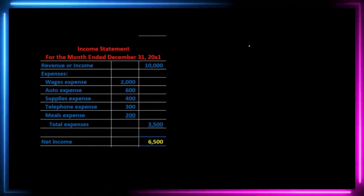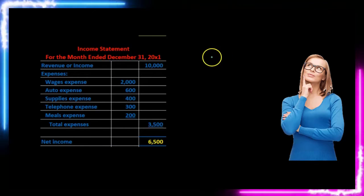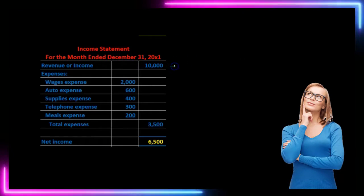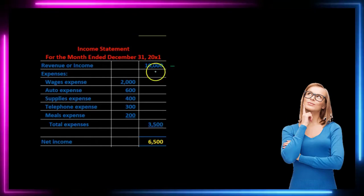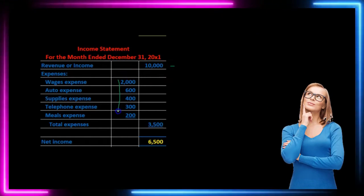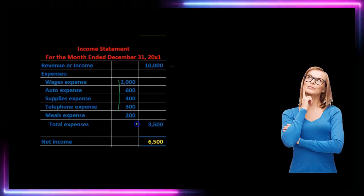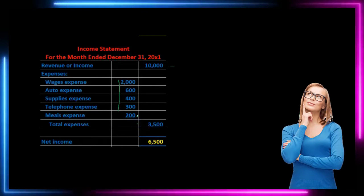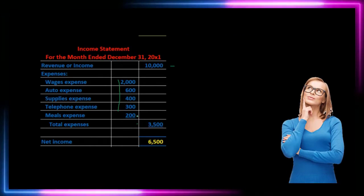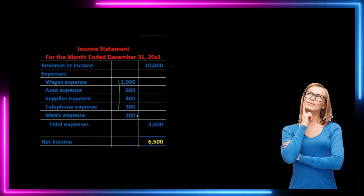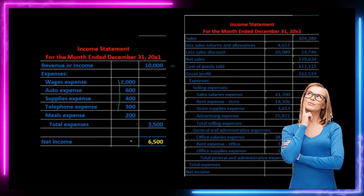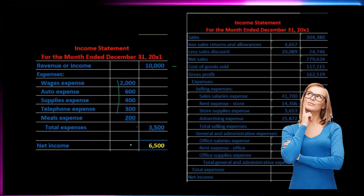For example, a single-step income statement may just have one group of income, a list of all the expenses grouped together, and we basically just have revenue less expenses, giving us that net income bottom line number on the income statement.